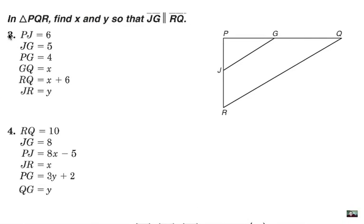Alright, we're going to be looking at problems 3 and 4 only. And it says in triangle PQR, notice that's the very large triangle here, PQR, find the value of X and Y so that JG is parallel to RQ. Now, in order for that to happen,